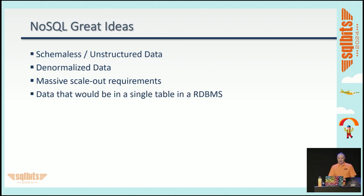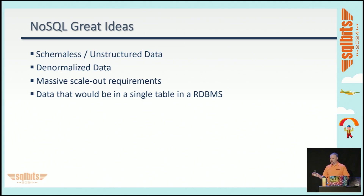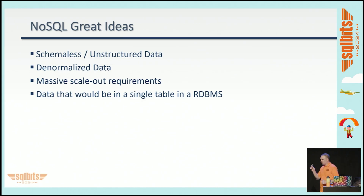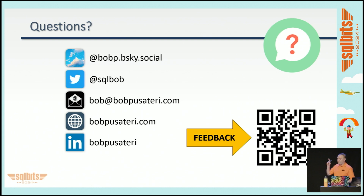Great ideas for NoSQL: if you have schema-less or unstructured data, if you have data that fits really well into a non-relational model, use that. If you have really massive scale-out requirements, this is where non-relational databases really shine. And if your data would end up in a single table in a relational database by itself, consider non-relational for that too. If you'd like to submit an evaluation or contact me, the info is on the final slide. Any questions? Thank you very much.